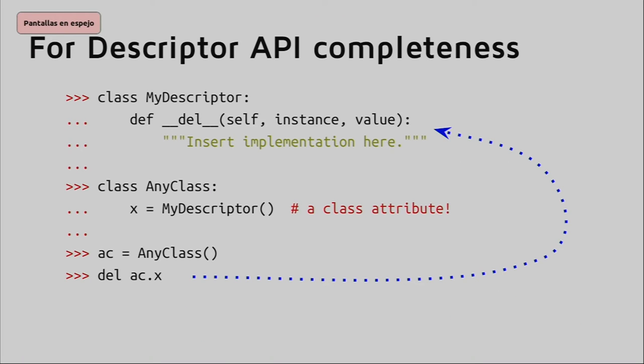Just for completeness, we have another special method: `__delete__`. As you may imagine, it specifies code that is executed when you delete an attribute. So when you do del ac.x, instead of Python's normal behavior of removing the attribute, some code of yours is executed.